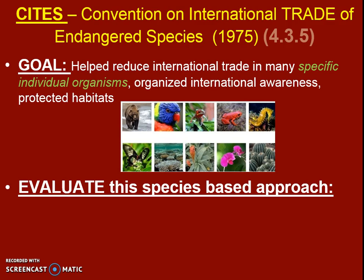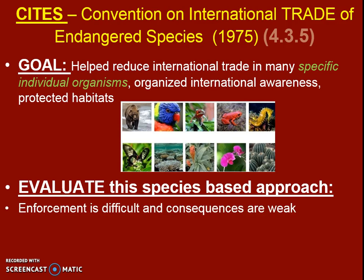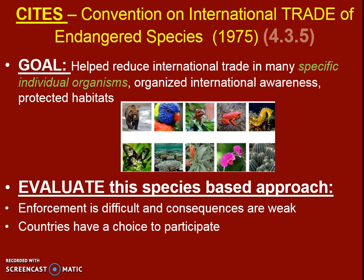So let's evaluate that. The enforcement is pretty difficult because consequences are weak, but there are fines. For instance, if a rhinoceros tusk was traded and found on the market, they would try to trace it back and find someone — but that's really tough to do, especially since it's international. At least it's starting to be in place. Countries get to opt in, and that part makes enforcement even more difficult.